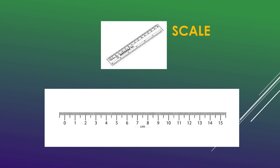Did you see the small lines in between each cm? They are the mm. Each cm consists of 10 mm. That is, 1 cm is equal to 10 mm.